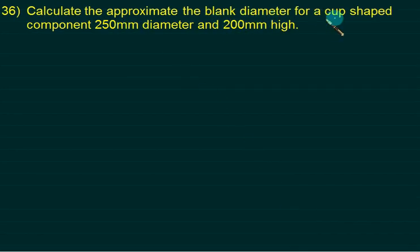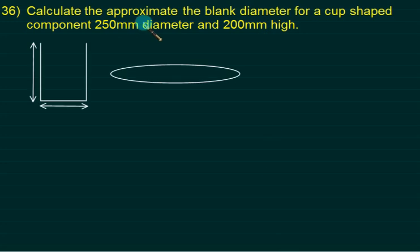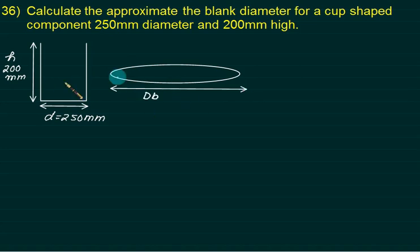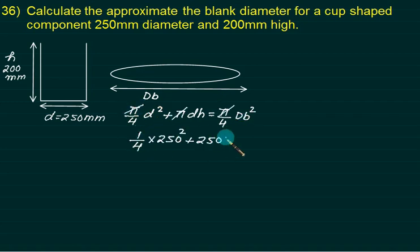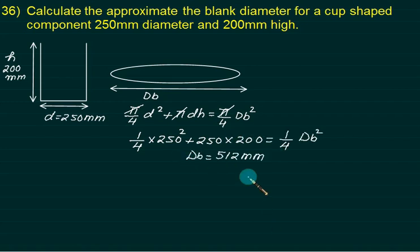Example: Find the approximate blank diameter for a cup of diameter 250 mm and height 200 mm. Equating surface areas: (π/4)·Db² = (π/4)·250² + π·250·200. Cancelling π, we get (1/4)·Db² = (1/4)·250² + 250×200. Solving this equation gives a blank diameter of 512 mm.